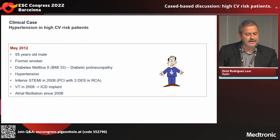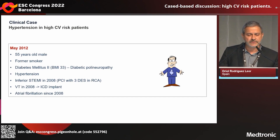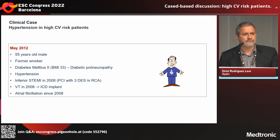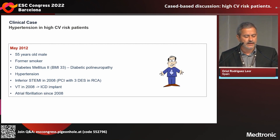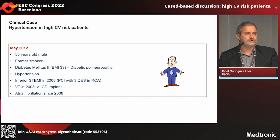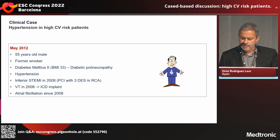So this is the clinical case. It was one of the first patients that we treated in our hospital. It was in 2012 and it was a 55-year-old male, former smoker with diabetes with diabetic polyneuropathy at that time. He had also hypertension and coronary artery disease with an inferior myocardial infarction that was treated with PCI. He had an ICD implant due to different episodes of ventricular tachycardia and was also on atrial fibrillation.